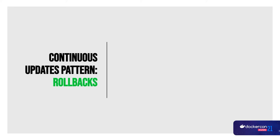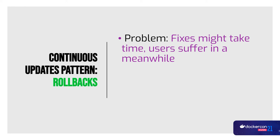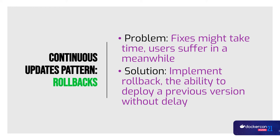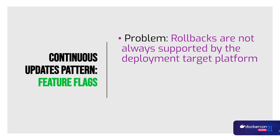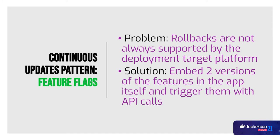Rollbacks are super important — fixes might take time and users need working software in the meantime. We want the ability to deploy a previous version without any delay. Rollbacks are not always supported by the deployment target platform. Take Google Play and the Apple App Store for example — neither supports rollback. If you find a bug, you have to create a new version and wait for the review. But you can use feature flags, which allow you to change behavior via a REST API call. You embed two versions of the feature in the app itself and trigger them with an API call.